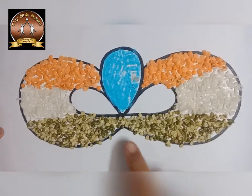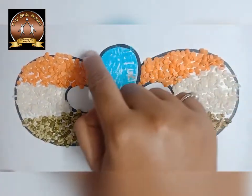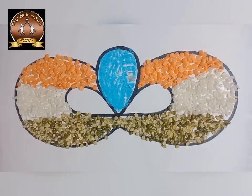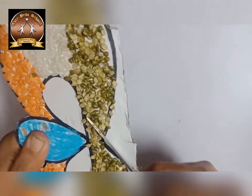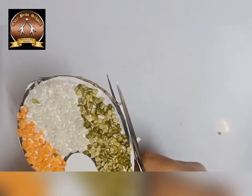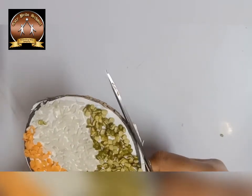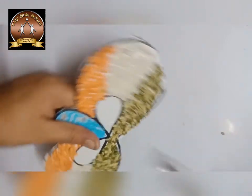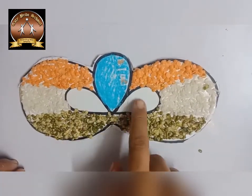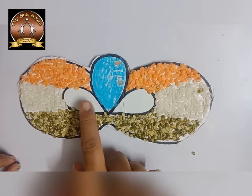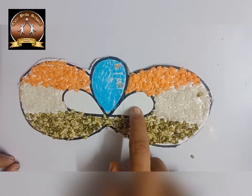After finishing this, we are going to cut the outside part of the mask with the help of scissor. Children, you have to remember, you have to use very thin cardboard or thin file. Otherwise, it will be difficult to cut with the scissor. Take the help of your parents while cutting anything. Now, after finishing this, we are going to cut the two leaves we have drawn with the help of cutter, because we are going to wear this mask.